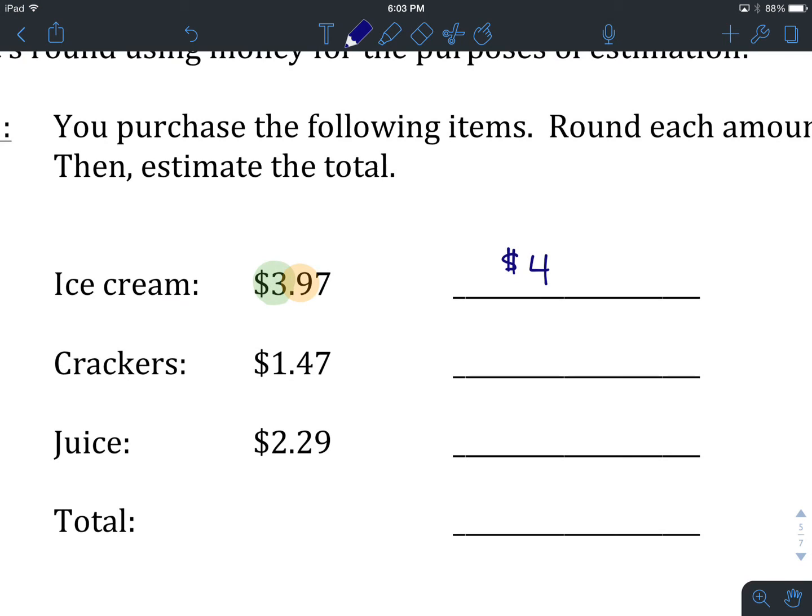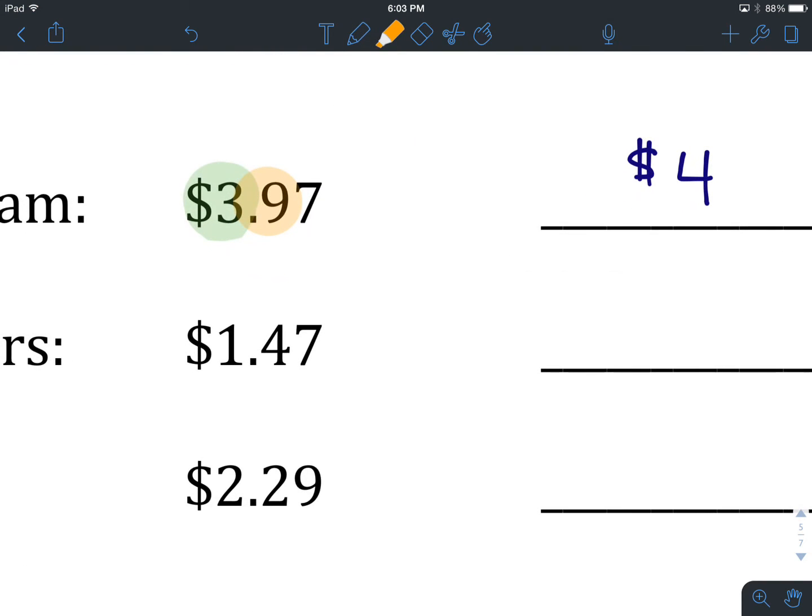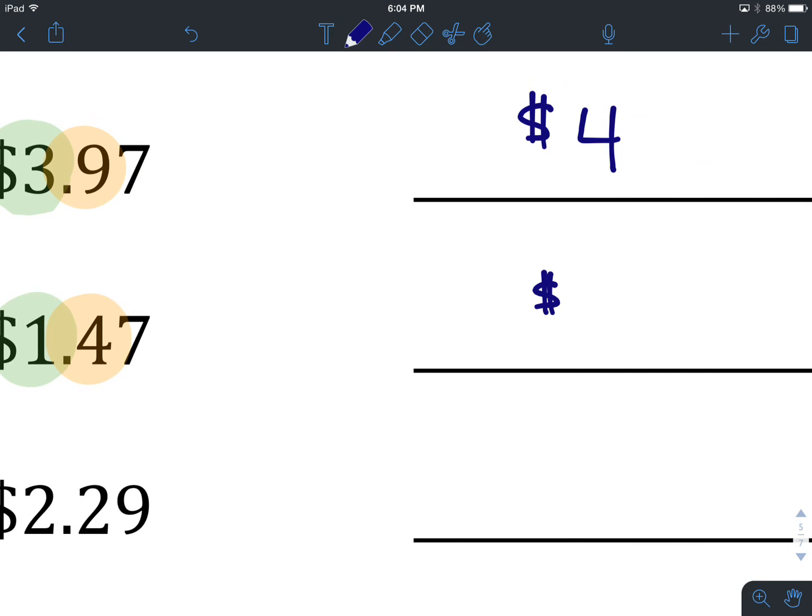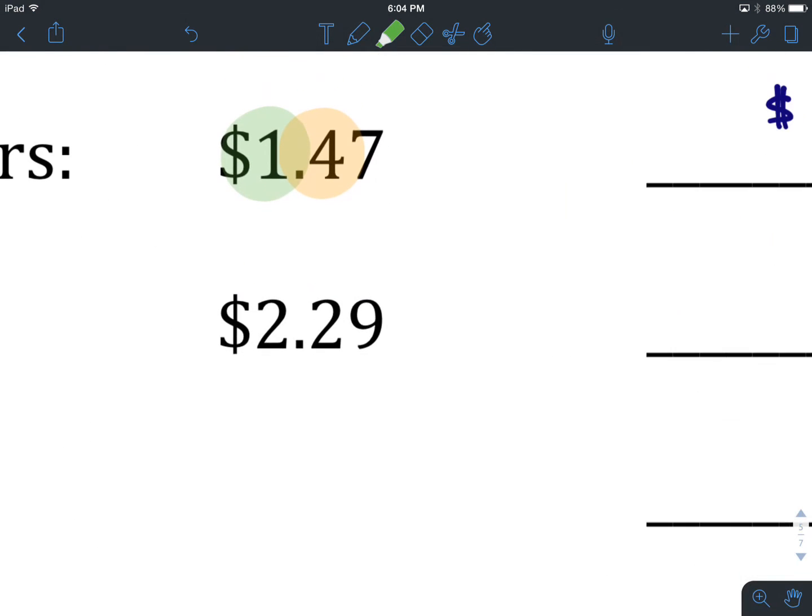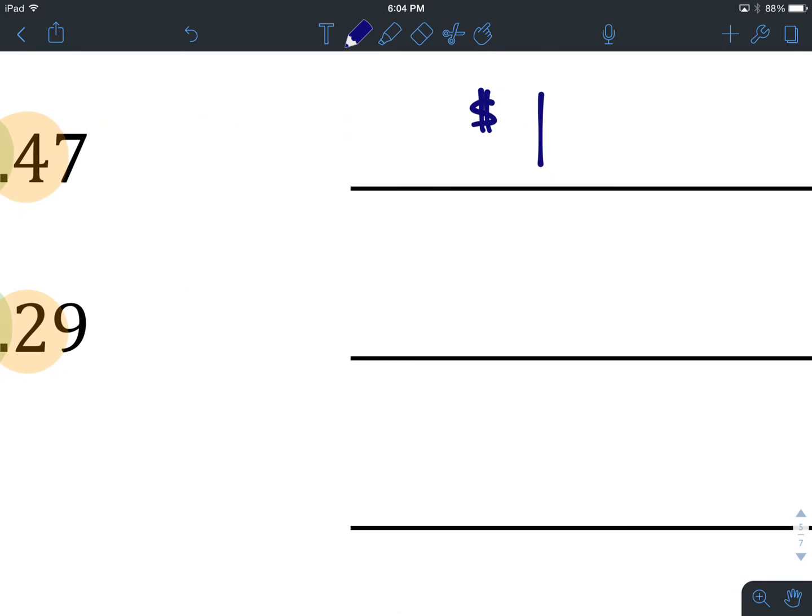You're back. Let's take a look at crackers and juice. For crackers, we're rounding to dollars. There's our dollar place value. We go to the digit after the one we want to round, which is a four. Four does not round up, which means we keep that one the same. We have rounded $1.47 to $1. Juice is $2.29, rounding to the nearest dollar. One to the right of our place value is a two. That will also not round up, so we're going to keep that value the same. It's going to be two.